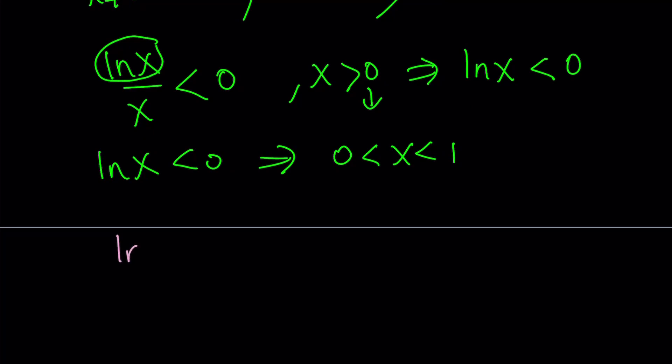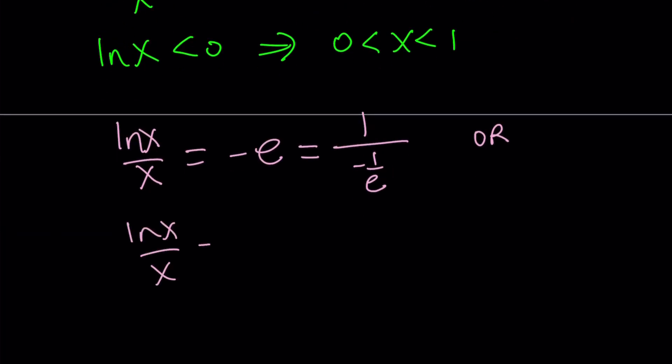We have ln x over x equals negative e. Now we can write negative e in different ways. Since we have a quotient on the left-hand side, I could write it as a quotient like 1 over negative 1 over e. Or I can write it as negative 1 over 1 over e. If you look at the first one, x corresponds with negative 1 over e and ln x corresponds with 1. But ln x equals 1 means x equals e, so that doesn't work.